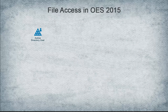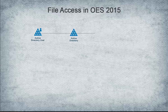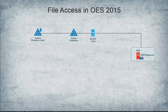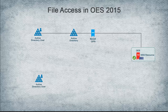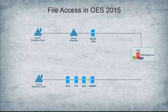Beginning with OES 2015, Active Directory users can authenticate to Active Directory and natively access NSS resources using only the CIFS protocol, after the NSS media is upgraded and Active Directory enabled to support Active Directory users. File access for eDirectory users remains the same as it was prior to OES 2015. NSS file access for Active Directory users using NCP, FTP, AFP, and Samba is not supported.